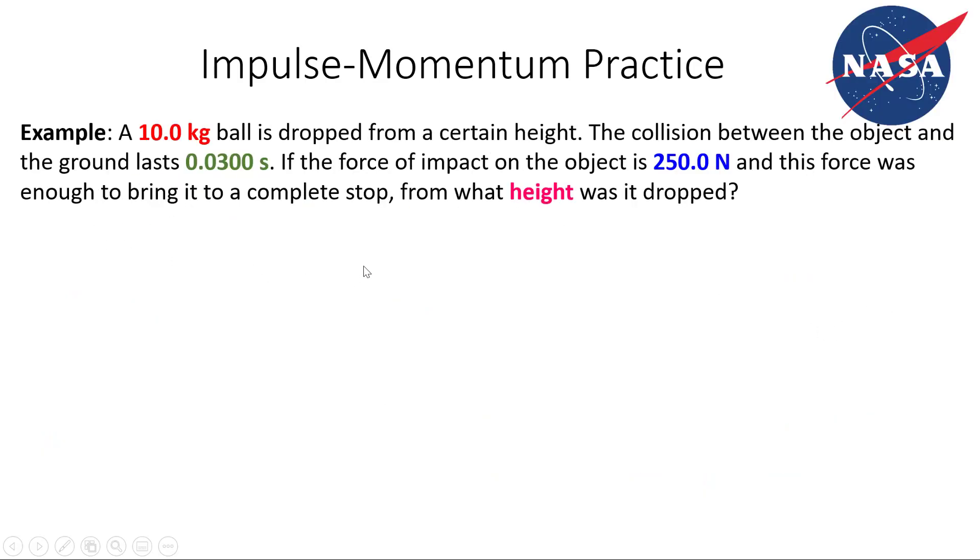One more example. A 10-kilogram ball is dropped from a certain height. The collision between the object and the ground lasts 0.300 seconds. If the force of impact on the object is 250 newtons, and this force was enough to bring it to a complete stop, from what height was it dropped?